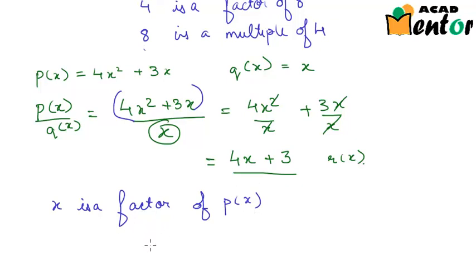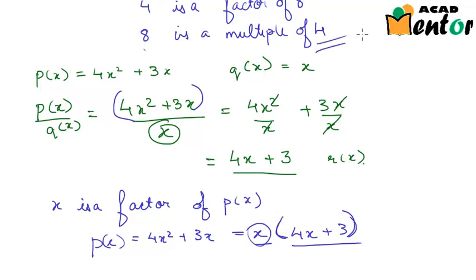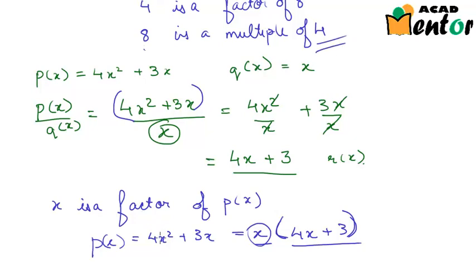If we look carefully at 4x² + 3x, we observe that x is common in both terms. That means if I pull out x, I would have 4x + 3. So I can write p(x) as x times (4x + 3). Hence, x and (4x + 3) are the factors of p(x), or p(x) is a multiple of x, as we had just seen in the case of numbers.